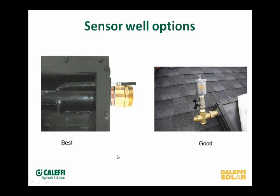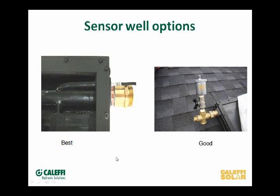I have an old solar friend up in Montana who does what he calls a stagnation sensor — he puts a sensor on the thin tube because he wants to know the temperature in the box more than the temperature of the fluid, claiming that's a better measure of radiation. We're giving you the options. We also give you two wells on our collector, so if you flip the collector the opposite way, you'll still have a well at the top.